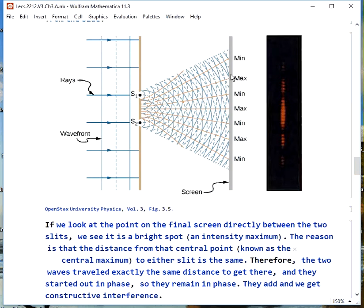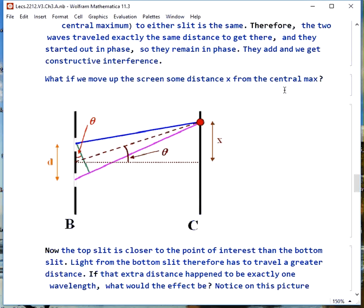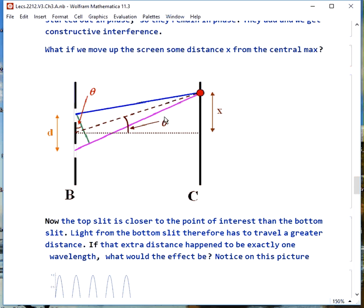If you move off to the side, for example, up this way, now we're a little closer to the top slit, a little further away from the bottom slit, so they have to travel different distances, and they will pick up different phases. They will no longer be in phase, and eventually, that distance is so great that we get a dark spot. If we keep going, the distance increases even more, and we're back to bright spots.